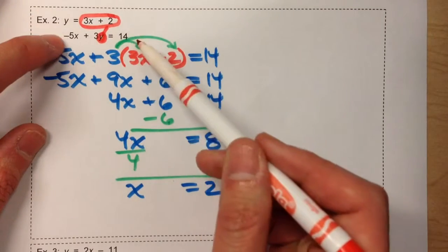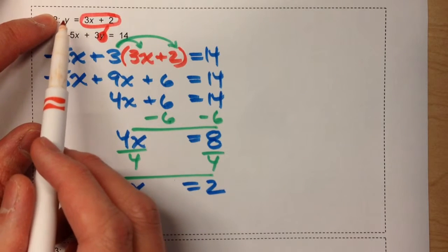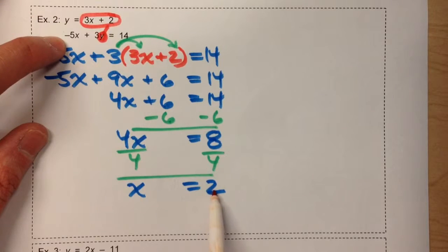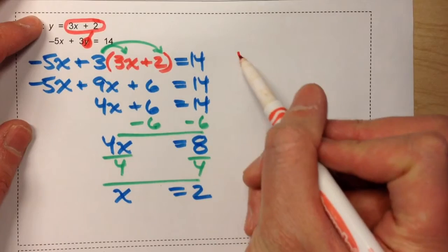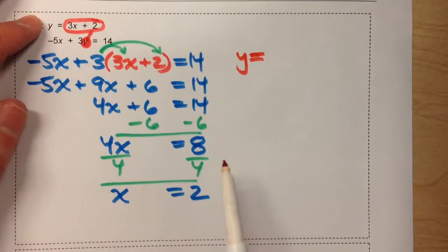Now notice, in this situation, we've only got one equation where it says y equals. Technically we could put 2 in for x in the second equation, but it'd take a bunch of extra work to solve for y. So we're going to use this equation, the first one, y equals. Since we want to know what y equals, we're going to use the equation that says y equals.